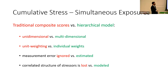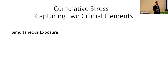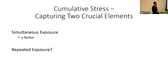This approach only helps us capture one of two crucial elements of cumulative stress — simultaneous exposure to multiple stressors, captured by the S factor. But what about repeated exposures over time? Cumulative stress isn't just about being simultaneously exposed to multiple stressors; there are also certain stressors that are chronic and reoccur over and over again. So if we use the S factor to capture simultaneous exposure, how do we also capture repeated exposures and hence measure the second crucial element of cumulative stress?